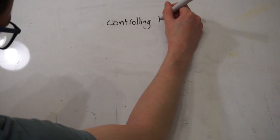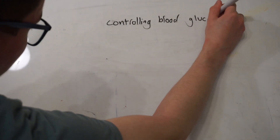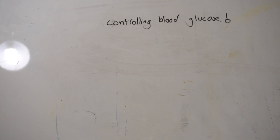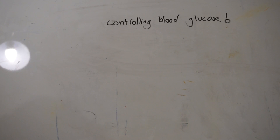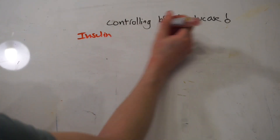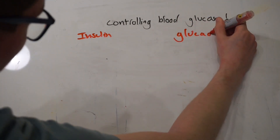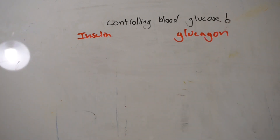Hello and welcome to Biology Explained. Today we're going to be looking at control of blood glucose as part of the GCSE revision series. Blood glucose in the body is controlled as part of a homeostasis mechanism. Homeostasis is the control of your internal environment, and this happens in your body in a variety of ways. One of these ways is by controlling the levels of blood glucose in your blood, and that requires two hormones, insulin and glucagon.